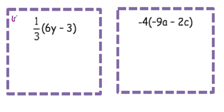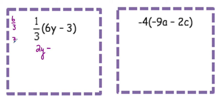1 third times 6 — well remember, that's the same as 6 divided by 3. So 1 third of 6 is 2, and we have a Y. Then we have 1 third of 3, so 3 divided by 3 is 1.